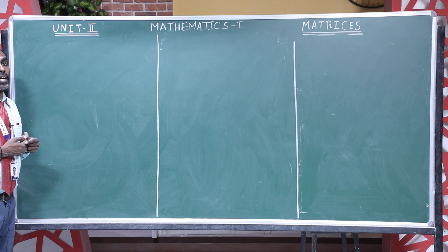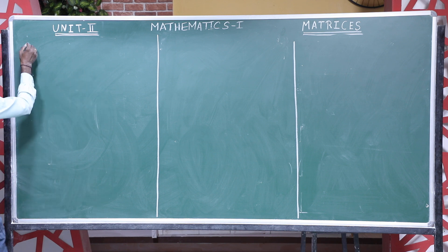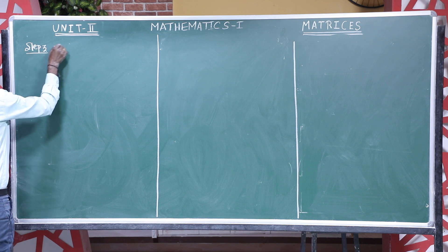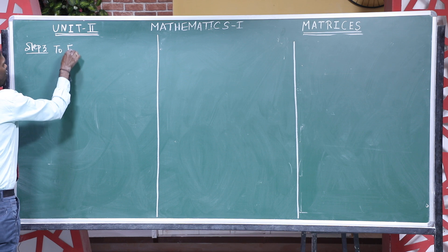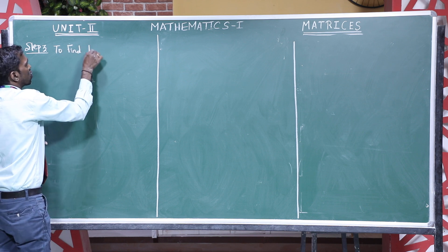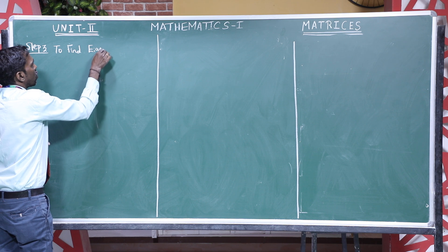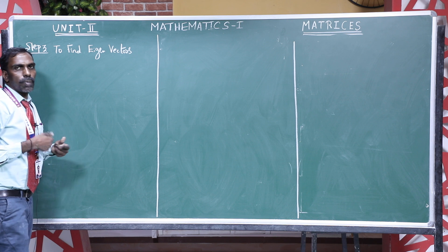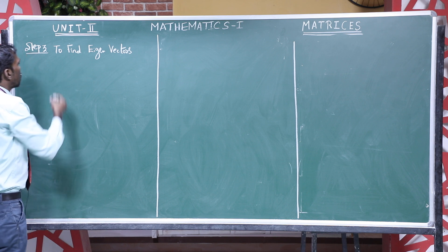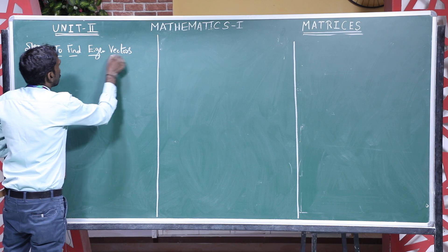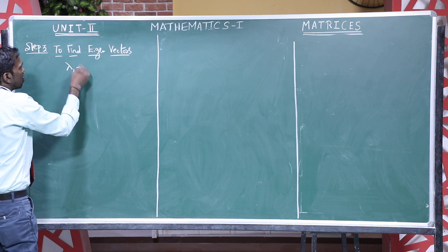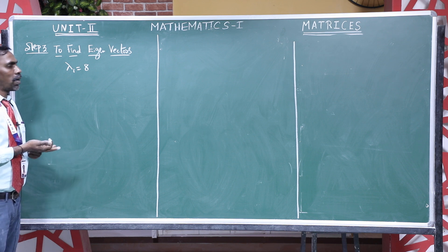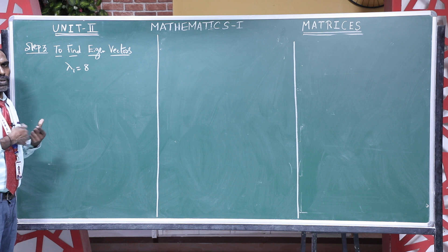Next step: find out the eigenvectors. What is Step 3? Step 3 will be to find eigenvectors — to find eigenvectors for corresponding eigenvalues. I got eigenvalues 2, 2, 8. So I have 3 eigenvalues. I can take lambda 1 equal to 8, lambda 2 equal to 2, lambda 3 equal to 2. For each corresponding eigenvalue, we should find out the eigenvectors.